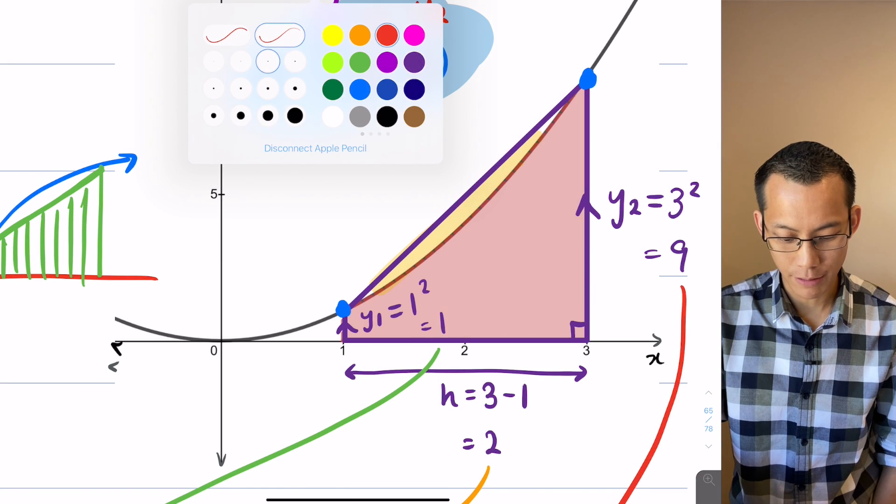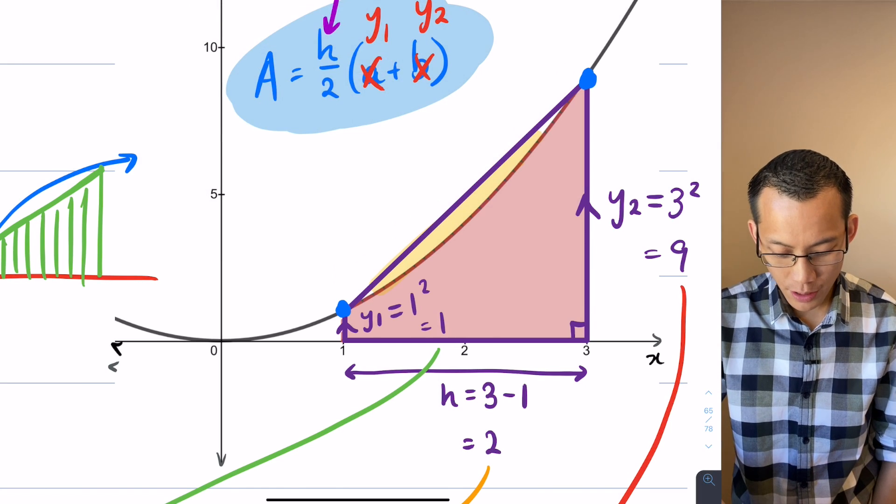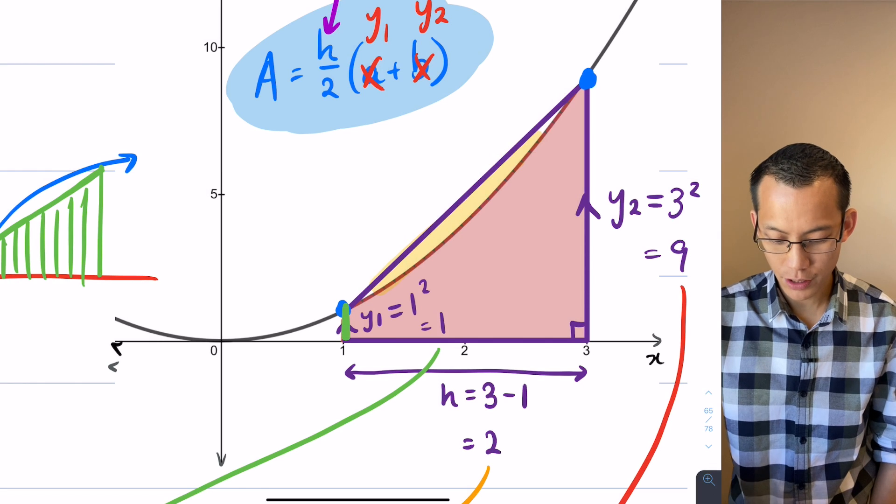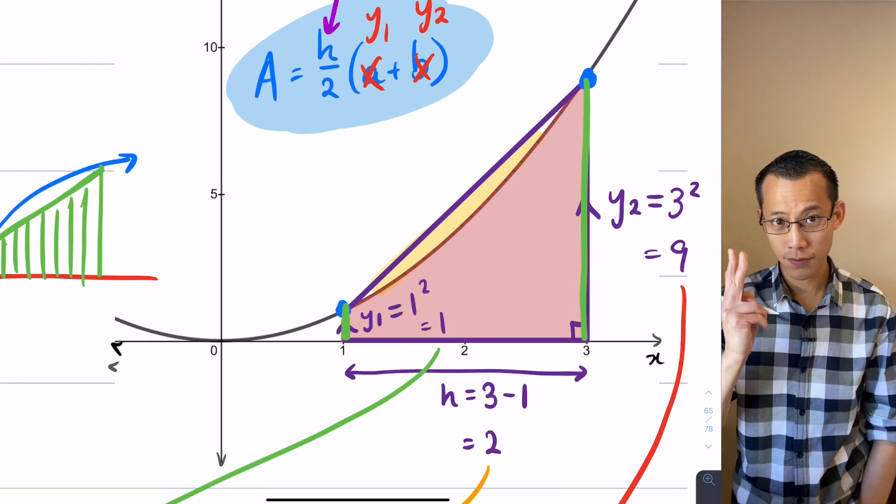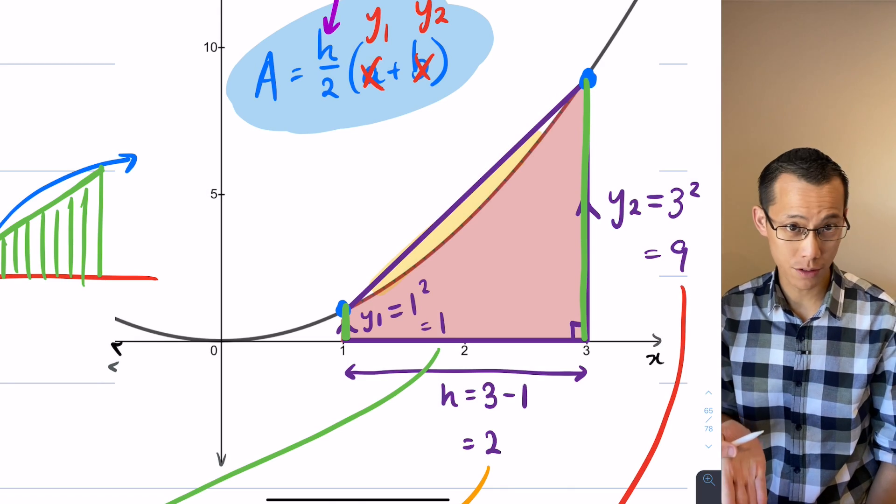So if I use a color like green you can see here's the first function value and here's the second function value. I've got two function values when I have one trapezium.